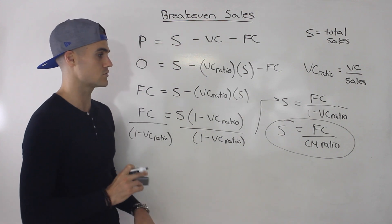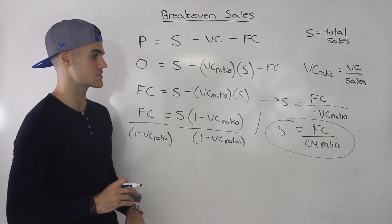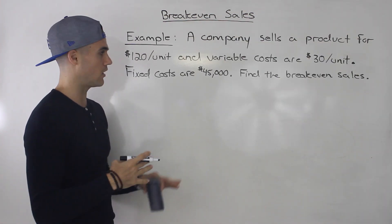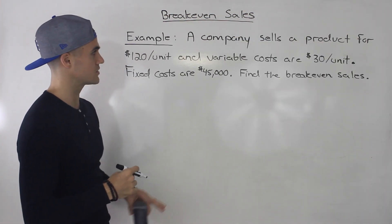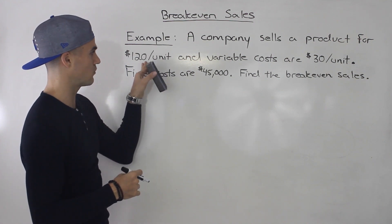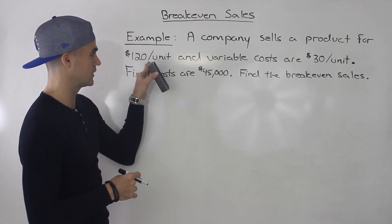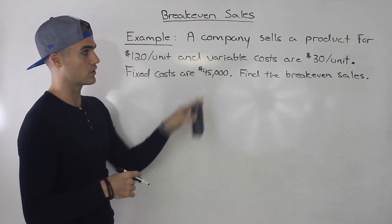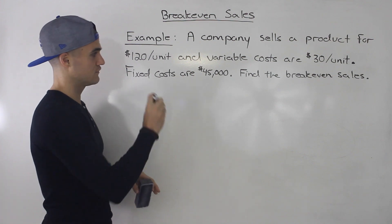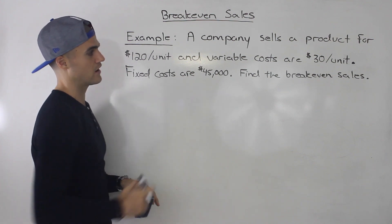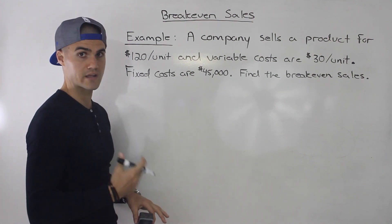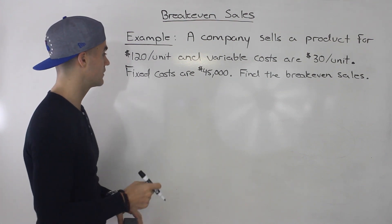So you'll probably see this formula in your textbook. In the previous video, we got the breakeven number of units as fixed cost over the unit contribution margin. But to get the breakeven sales, you divide the fixed cost by the contribution margin ratio. Let's do a simple example: a company sells a product for $120 per unit, variable costs are $30 per unit, and fixed costs are $45,000. Find the breakeven sales.